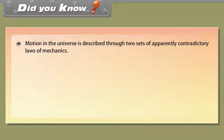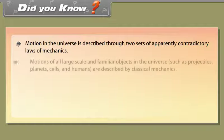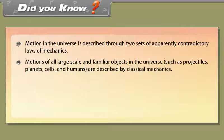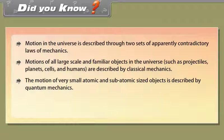Did you know: Motion in the universe is described through two sets of apparently contradictory laws of mechanics. Motion of all large-scale and familiar objects in the universe — such as projectiles, planets, cells, and humans — is described by classical mechanics. The motion of very small atomic and sub-atomic sized objects is described by quantum mechanics.